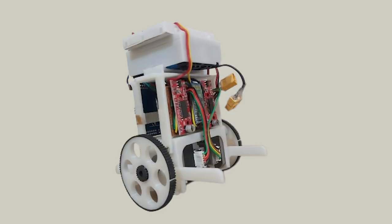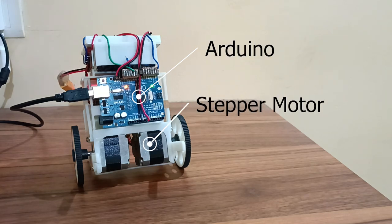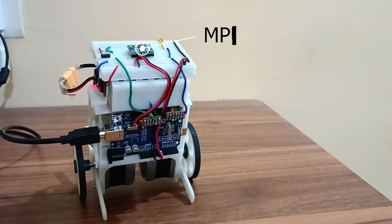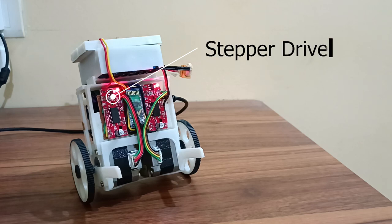We start with an example of a self-balancing robot. Here we have an Arduino Uno microcontroller, stepper motors, an MPU6050 6-axis gyro plus accelerometer sensor for tilt detection, a stepper driver, and an HC05 Bluetooth module.